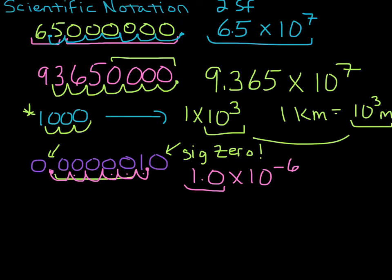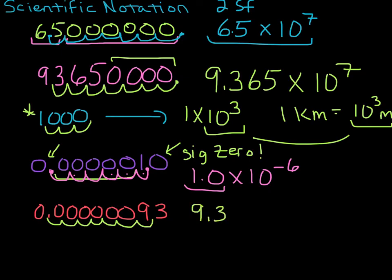So let's do another one here. 0.00000093. Why don't you pause it and try it. So we're going to take our decimal place, 1, 2, 3, 4, 5, 6, 7. So that's 9.3 times 10 to the negative 7. Remember, negative exponents indicate small numbers. And we have two sig figs. Both of these numbers have two sig figs, but it's easier to see in scientific notation. And notice that we're not counting the exponent in these significant figures in any of these numbers.